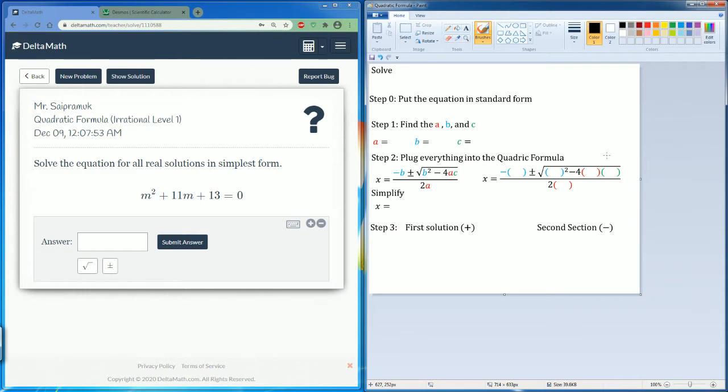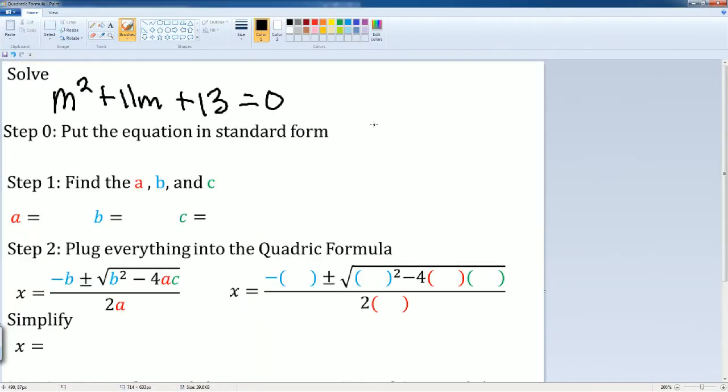I'm going to write down the polynomial that we have, which is m squared plus 11m plus 13 equals zero. Now we have to put it in standard form. Lucky for us, this is already in standard form.